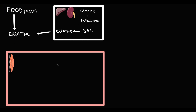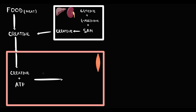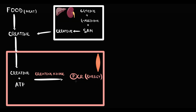Creatine goes from the blood into the muscles. Both cardiac muscles and skeletal muscles use creatine as an energy source. In the muscles we add to creatine an ATP molecule — this reaction is catalyzed by creatine kinase — and as a result we get phosphocreatine, which we use as an energy source for muscle contraction.